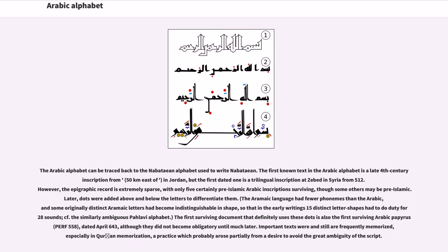The Arabic alphabet can be traced back to the Nabataean alphabet used to write Nabataean. The first known text in the Arabic alphabet is a late 4th-century inscription from 50 kilometers east of Amman in Jordan, but the first dated one is a trilingual inscription at Zebed in Syria from 512 CE. However, the epigraphic record is extremely sparse, with only five certainly pre-Islamic Arabic inscriptions surviving. Later, dots were added above and below the letters to differentiate them. The Aramaic language had fewer phonemes than Arabic, and some originally distinct Aramaic letters had become indistinguishable in shape, so that in the early writings 15 distinct letter shapes had to serve duty for 28 sounds. The first surviving document that definitely uses these dots is the first surviving Arabic papyrus, PERF 558, dated April 643, although they did not become obligatory until much later.